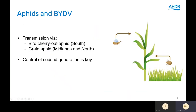Aphids can transmit BYDV via the barley yellow dwarf virus, and the main transmission is via bird cherry oat and grain aphids. Initially aphids colonise relatively few crop plants; however, it's the second generation that then tends to move away from the original plant that was colonised, and controlling this second generation is a key part of the BYDV management strategy.